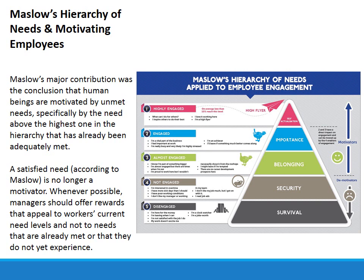Then you have your highly engaged person — someone who is achieving self-actualization. They are looking at what they can do for others, how they can inspire others. They love their jobs and the company they work for, and they are what they call a high flyer. Someone who has reached this level is committed to their job at the facility where they work, and that's what we ultimately want our employees to feel.